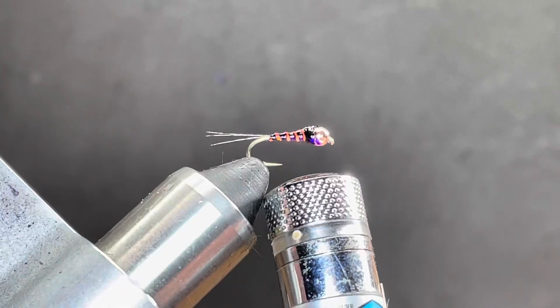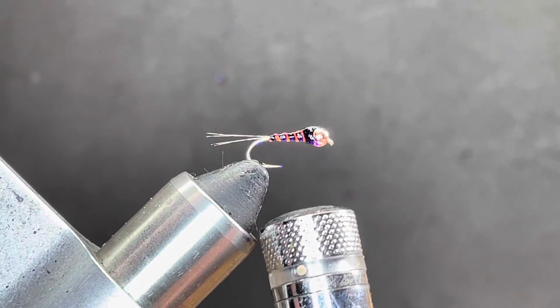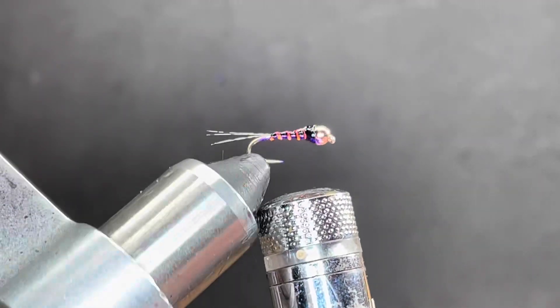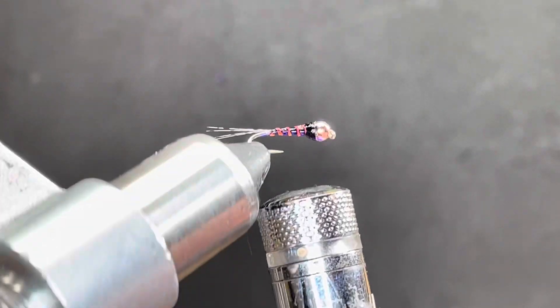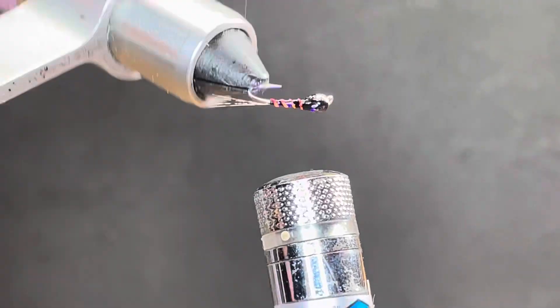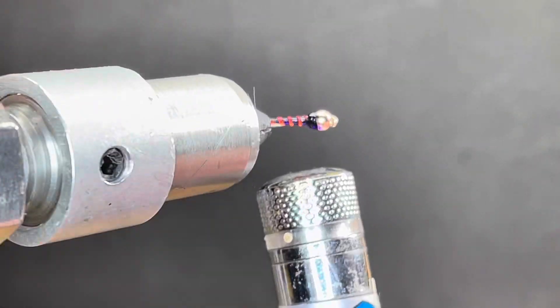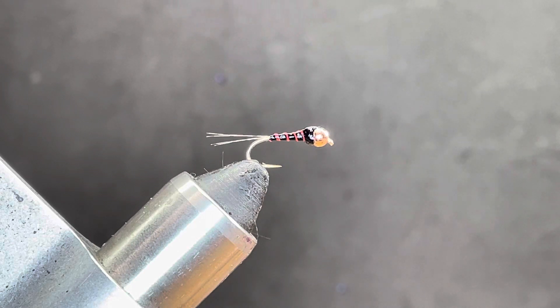It's called a copper top POB. The original one was with a black bead and on a jig head. They still have the black wing case on there, which I get, it sort of makes sense. You'd think it'd be like a hotspot wing case or something, but for whatever reason this pattern doesn't have that. So, anyway, that's it.